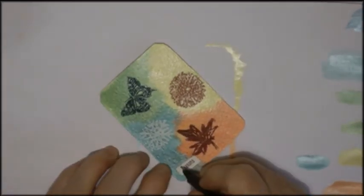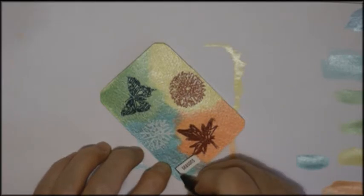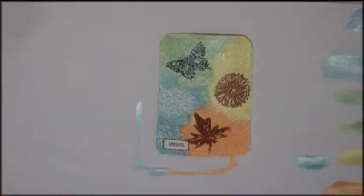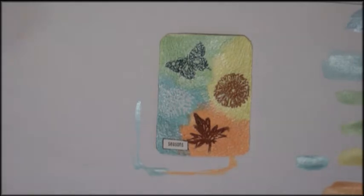And then I think I wrote the word seasons with my little label machine, right around the outside. And there's my card on seasons. The watercolor paint is a shimmer paint. I think it's artist loft.